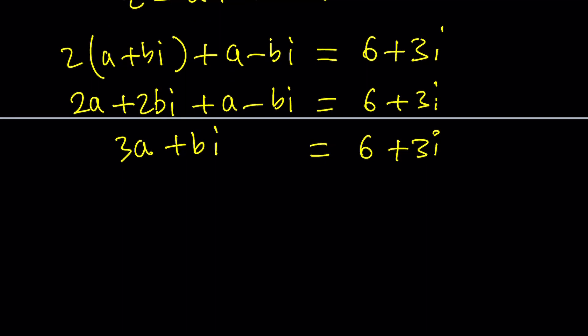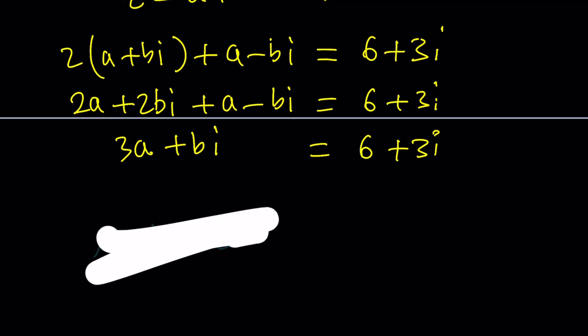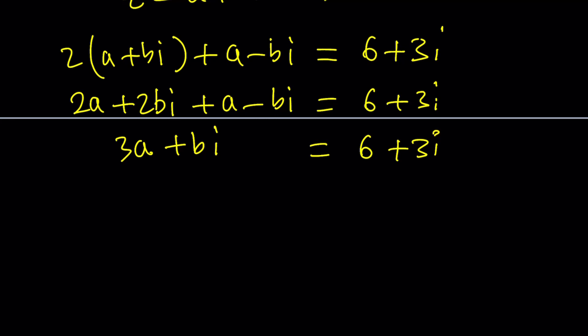Now when two complex numbers are equal, remember the rule you're going to set. So when you have something like a plus bi equals c plus di, then this basically implies a equals c and b equals d.